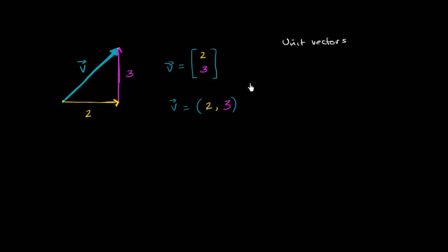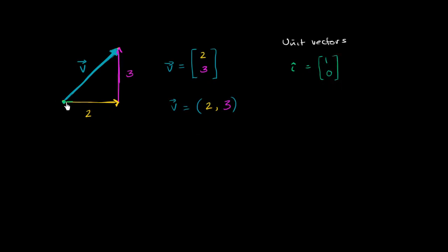If we're in two dimensions, we define a unit vector for each of the dimensions we're operating in. If we're in three dimensions, we define a unit vector for each of the three dimensions. So let's define a unit vector i. The way that we denote that it is a unit vector is, instead of putting an arrow on top, we put this kind of hat on top of it. The unit vector i only goes one unit in the horizontal direction and doesn't go at all in the vertical direction.